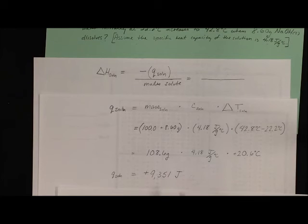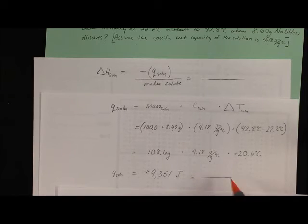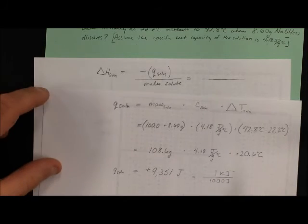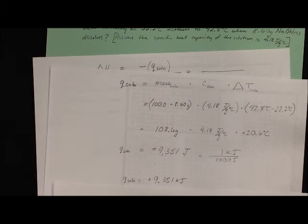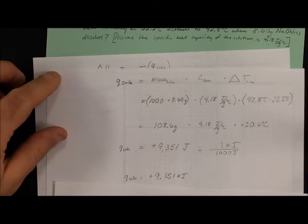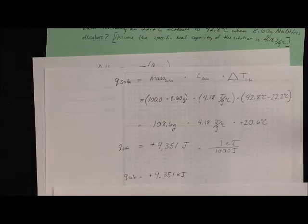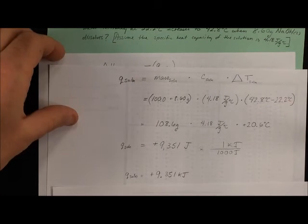To change from joules to kilojoules, you are simply dividing by a thousand. So for every 1,000 joules, there's one kilojoule. After we punch that in our calculator, we get 9.351 kilojoules, positive 9.351 kilojoules.